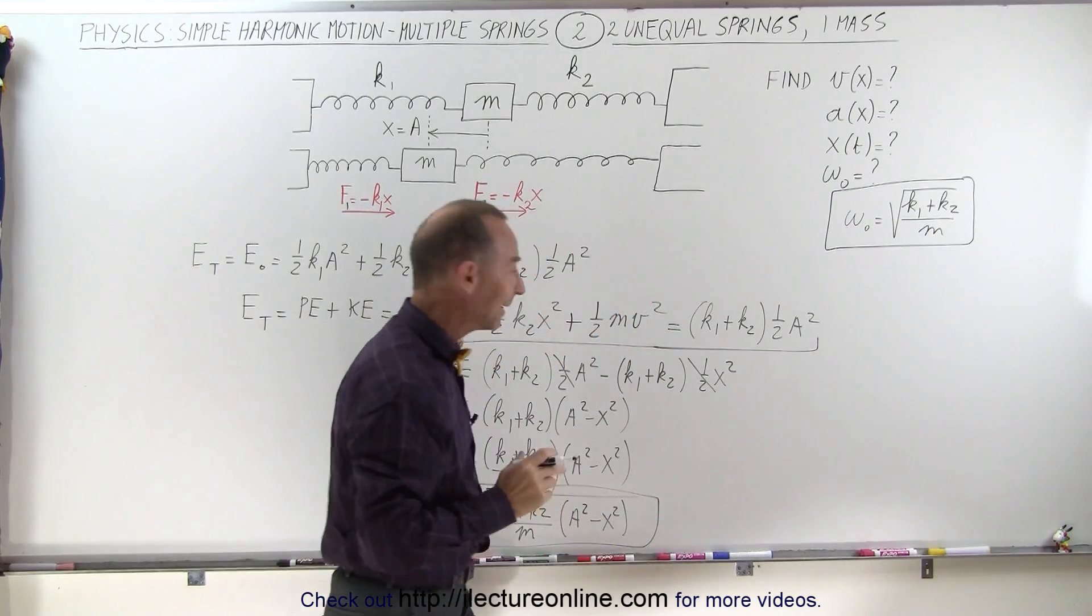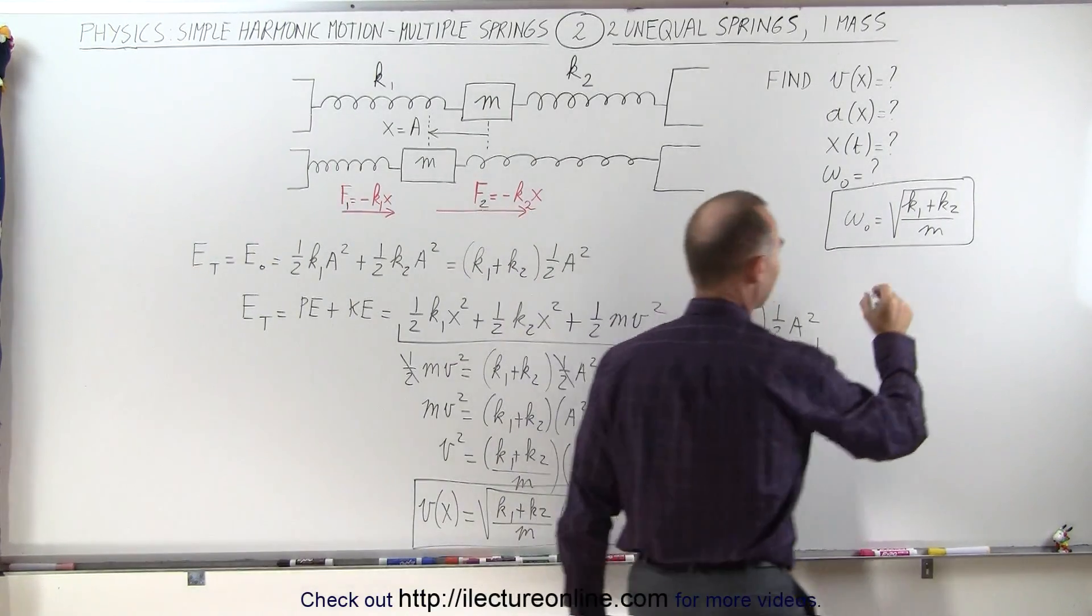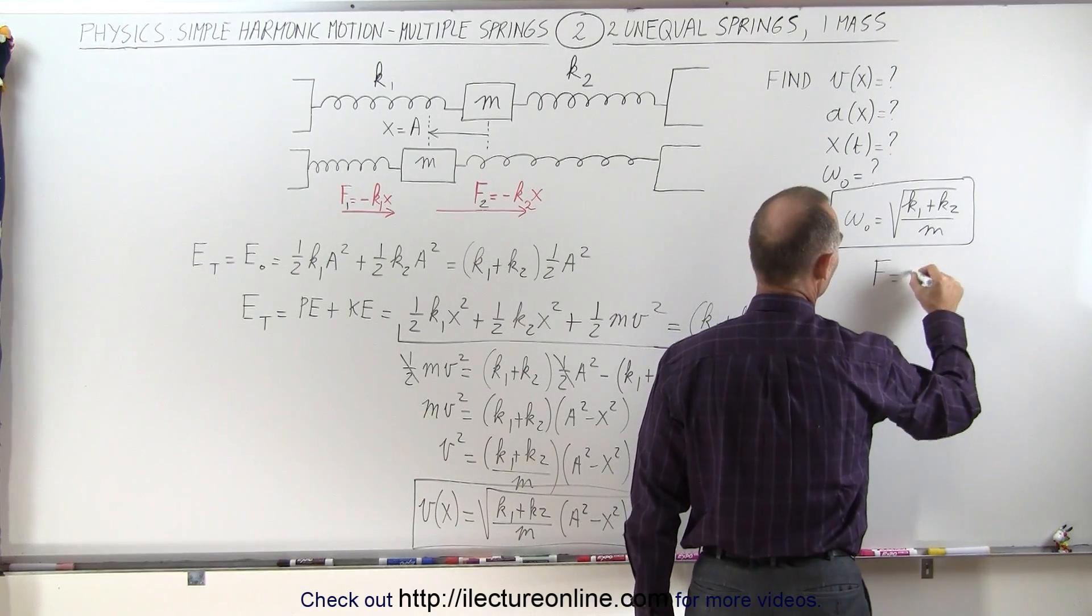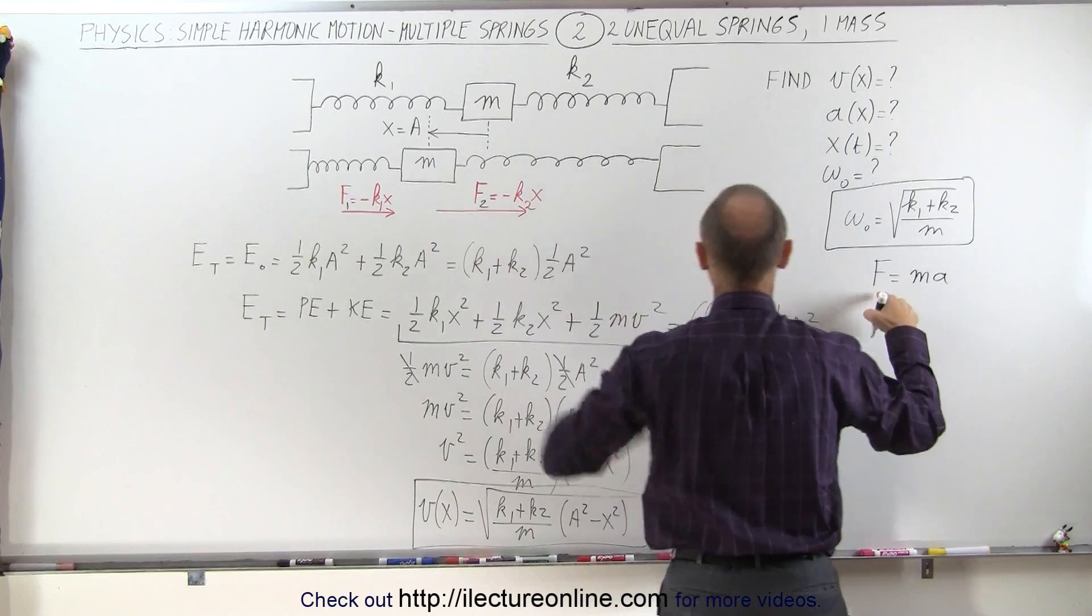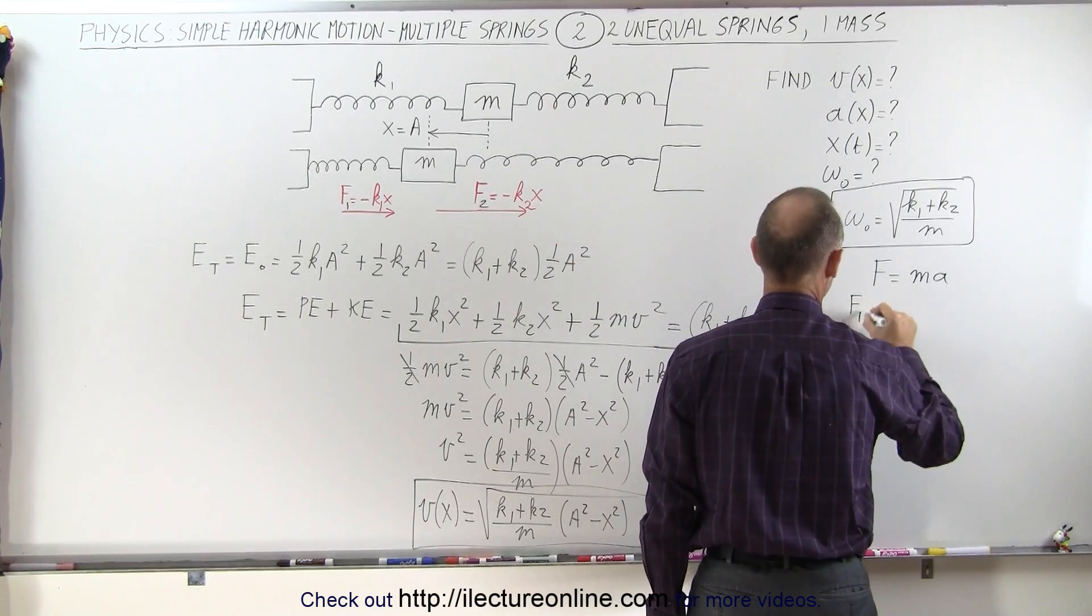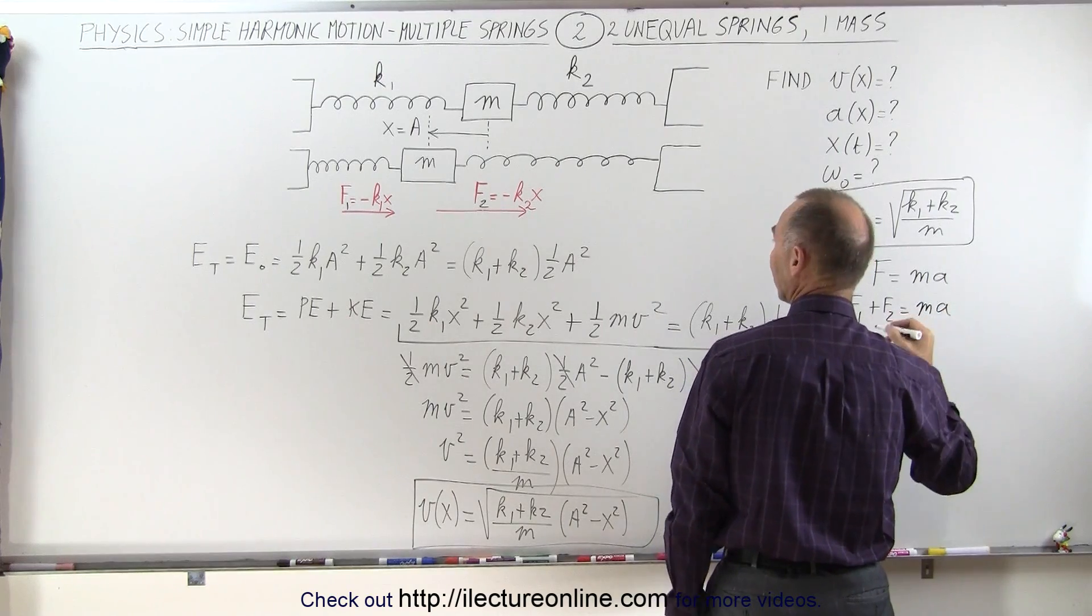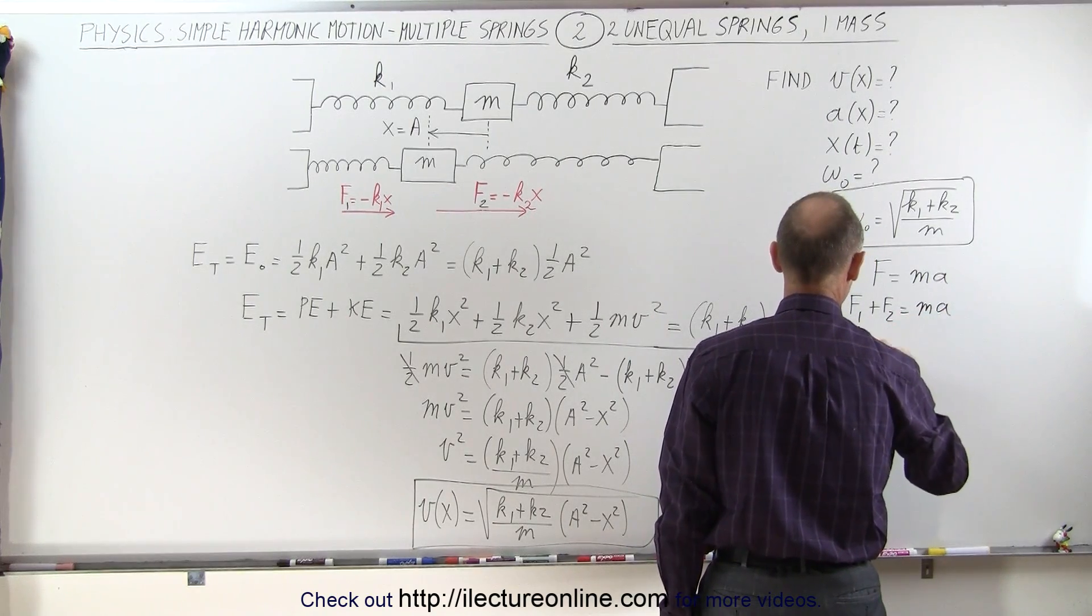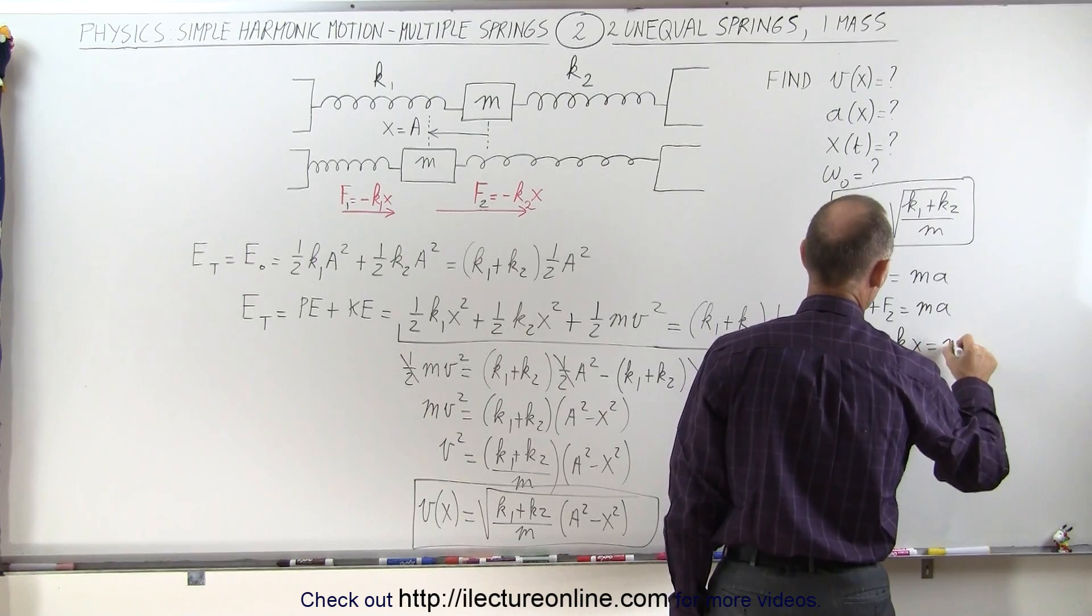Also, if we want to calculate acceleration as a function of position, we can say that f equals ma, starting with Newton's second law. And in this case, f will be the sum of these two. It will be f1 plus f2. So it's f1 plus f2 equals ma. And if we add those together, we get minus k1x minus k2x equals ma.